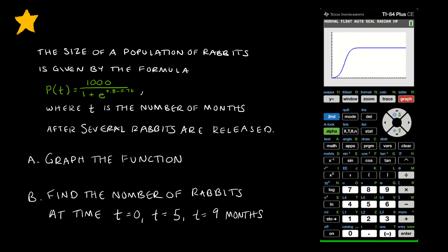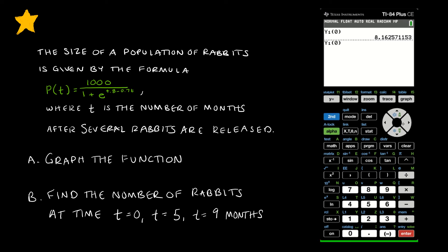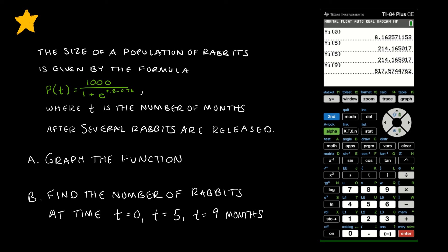Going back to the main screen, I click VARS, YVARS, and Function. I've entered the formula into Y1, so instead of doing the math myself, I can just evaluate Y1(0), which tells me that at t equals 0 there are about 8 rabbits. Replacing 0 with 5 gives 214 rabbits. Replacing 5 with 9 gives about 818 rabbits at 9 months.